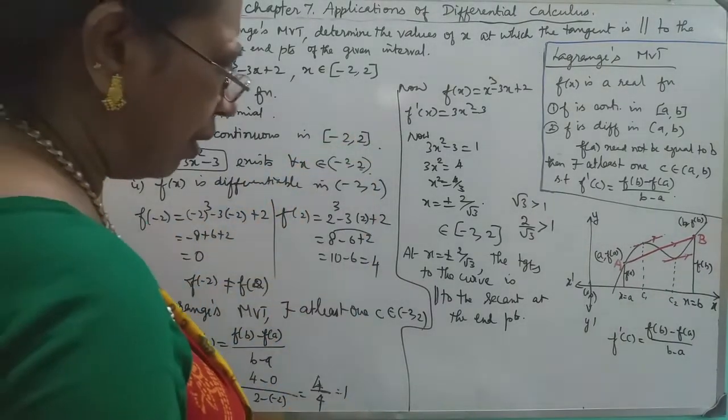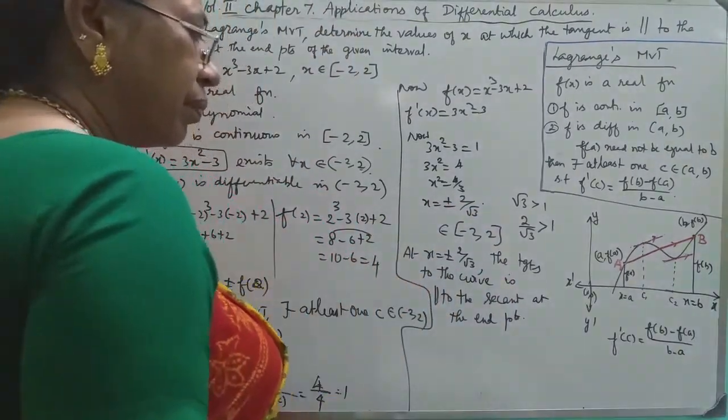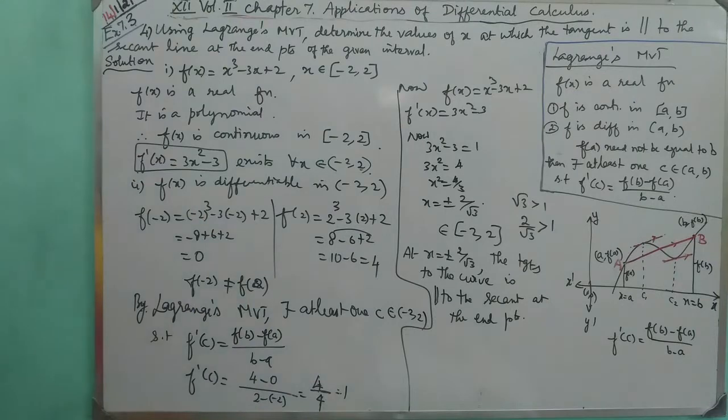f prime of x is equal to plus minus 2x, 3, 2 always.